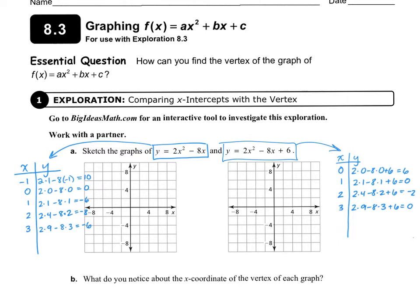I already found some points for these two graphs, so I'm going to go ahead and graph them both. The one on the left, we have negative 1, 10, and then 0, 0, 1, negative 6, and then down to negative 8, and we come right back up at 3. We know that this graph is going to be a U shape, and it is going to have an axis of symmetry coming down the middle. My axis of symmetry is going to be right here, and this point right here is the lowest point. Now all that we need to do is connect the points with a nice curved U shape.